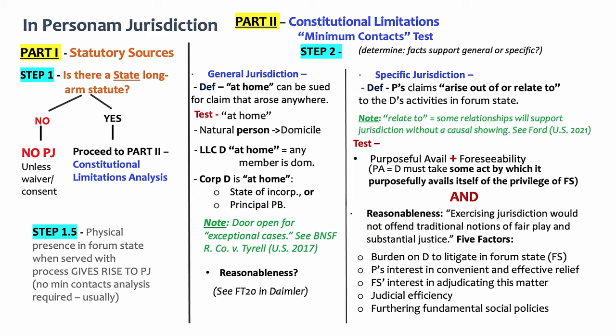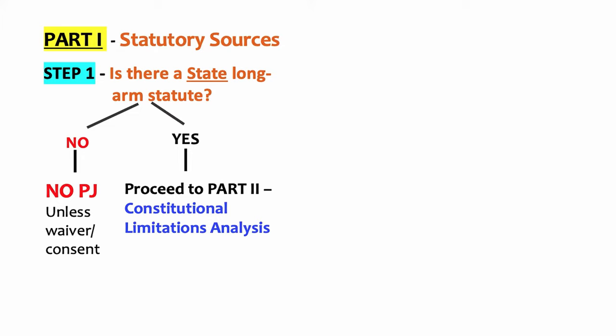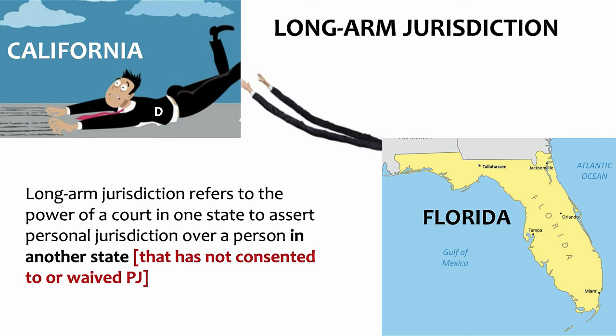Here is the roadmap with which we will be working. There are two parts: part one and part two. We will begin with part one. First, we will ask if there is a state long-arm statute. Long-arm jurisdiction refers to the power of a court in one state to assert personal jurisdiction over a person in another state. Every state has a law called a long-arm statute, which details under what circumstances a court may assert personal jurisdiction over an out-of-state defendant. Absent consent or waiver, when a court exercises personal jurisdiction, it must do so pursuant to an explicit grant of authority in a state statute, or else the court may not exercise personal jurisdiction.